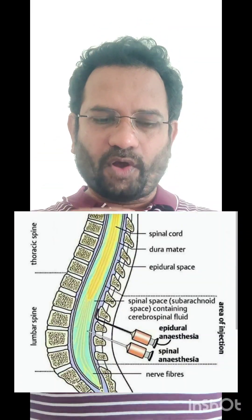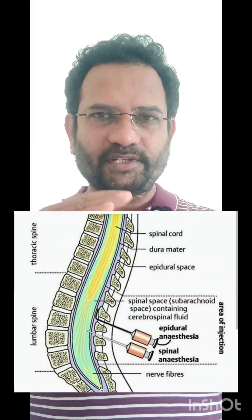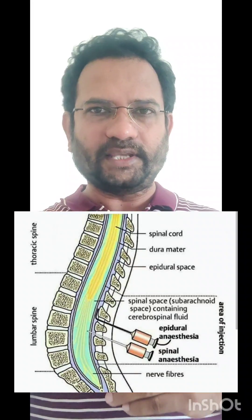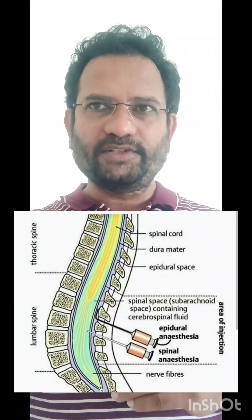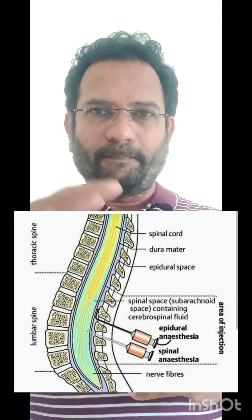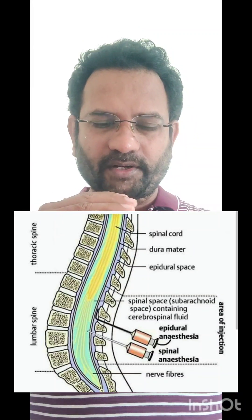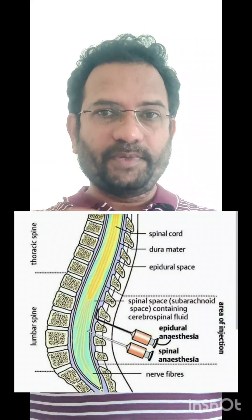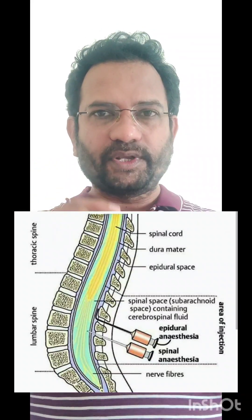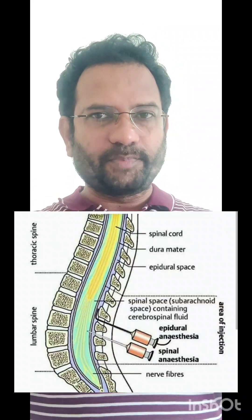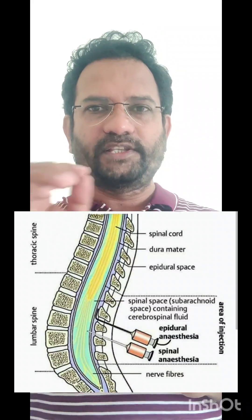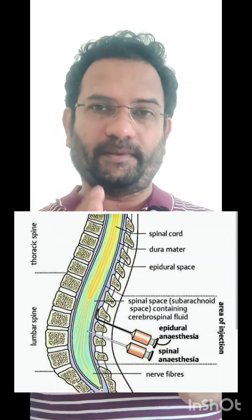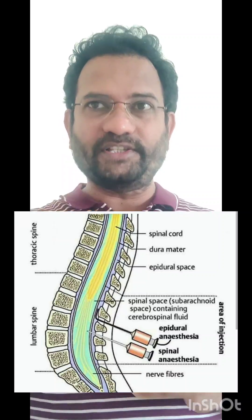There are spaces between these membranes. The space between periosteum and dura mater is known as epidural space — 'epi' means on the surface, so above the dura mater you have a space called epidural space. During surgeries, women are given anesthetic in this epidural space, which is called epidural anesthesia. After dura mater, there is arachnoid mater, and the space between them is subdural space, whereas the space between arachnoid and pia mater is subarachnoid space — where cerebrospinal fluid is located.